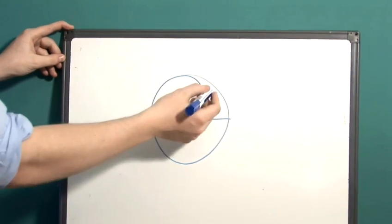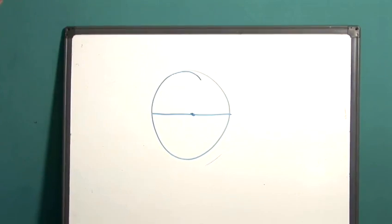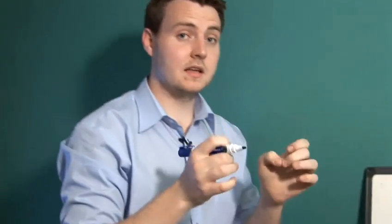and you also know the distance around the edge, which you can measure by getting a piece of string, pulling it around the edge of the object, and then measuring that string.